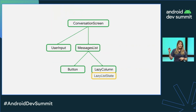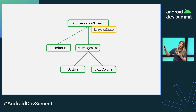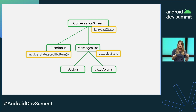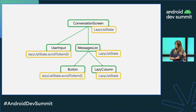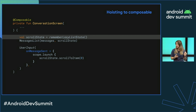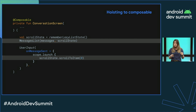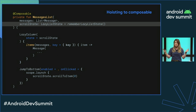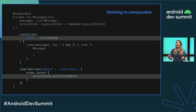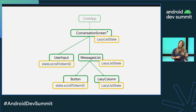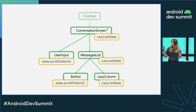Right now, the current owner of the lazy list state is the lazy column. So what we want to do is hoist it to at least a conversation screen, so it can be forwarded to the message list, and the user input can call UI logic. In our code, we go to conversation screen, define the state with lazy list methods, pass it down to the message list, and call UI logic in the user input. The message list defines it with a default value of remember lazy list state — just as lazy list does — as a best practice to increase stability, and then we forward it to the lazy column and the jump to bottom button, calling UI logic on it.